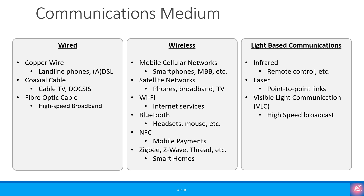Finally, there are also light-based communications that are not often talked about. The simplest example is the use of infrared in remote controls like the ones used for TV. There are also laser-based communications that are popular for point-to-point links. These links can be used for very long distances, for example from a satellite to an earth station on the ground. There is also visible light communications, which has been researched for a while and offers a secure communication channel for a variety of purposes.